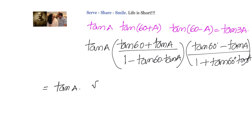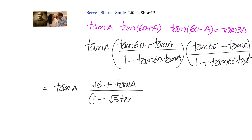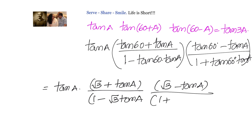Now let us substitute the values. tan(60°) is √3, so we have √3 plus tan(a) divided by 1 minus √3·tan(a), multiplied by √3 minus tan(a) divided by 1 plus √3·tan(a).